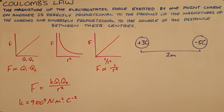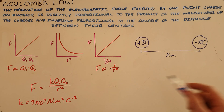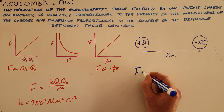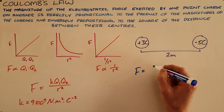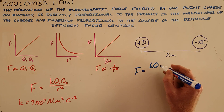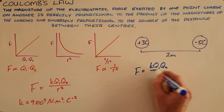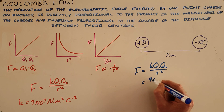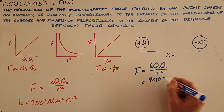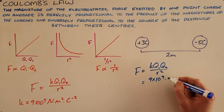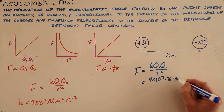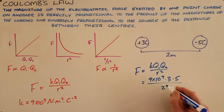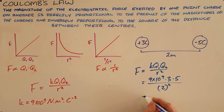We can now use this formula to calculate the force that exists between two charged objects. Starting with Coulomb's law: F equals K Q1 Q2 over R squared. K is the constant nine times ten to the nine, Q1 is three Coulombs, Q2 is five Coulombs, and the distance between them is two meters, which must be squared.